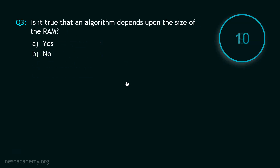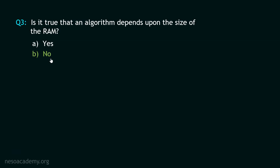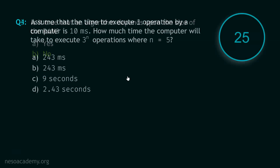And your time starts now. Stop! The correct option is option B. No. Is it true that an algorithm depends upon the size of the RAM? No, it is not true. Now here comes question number 4.